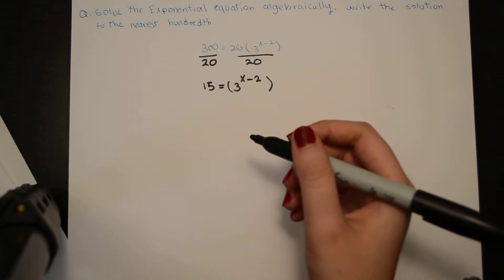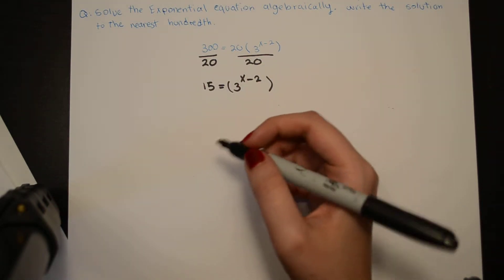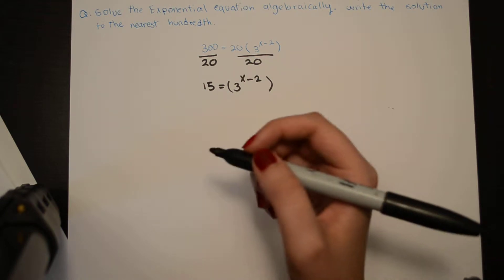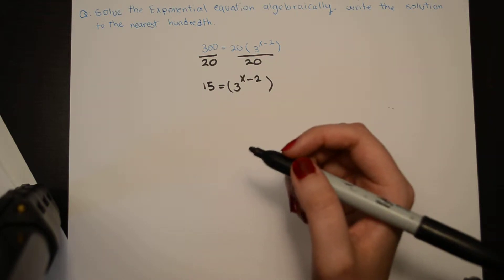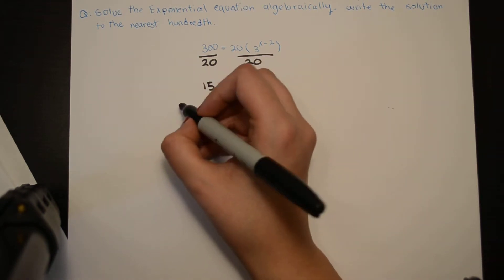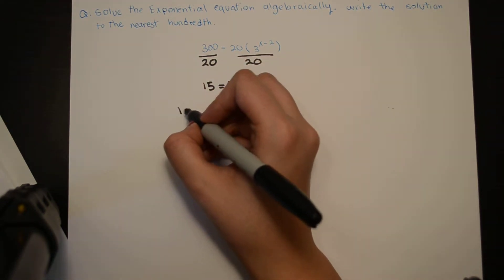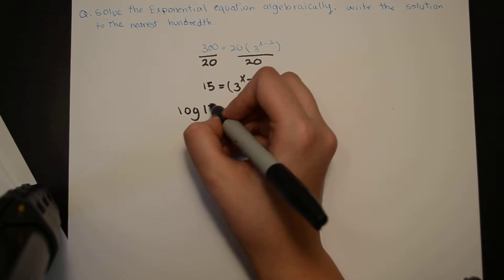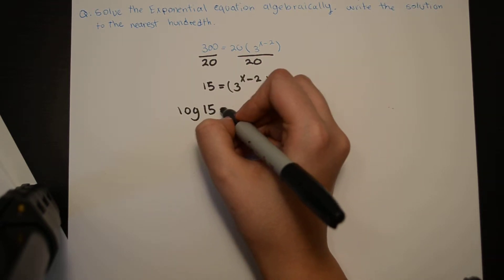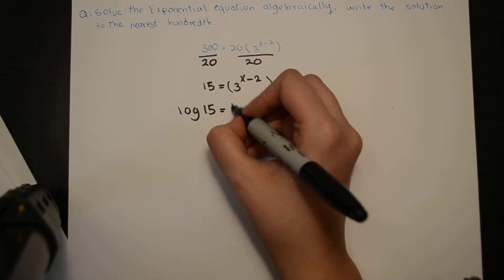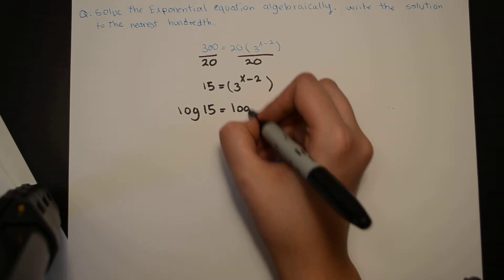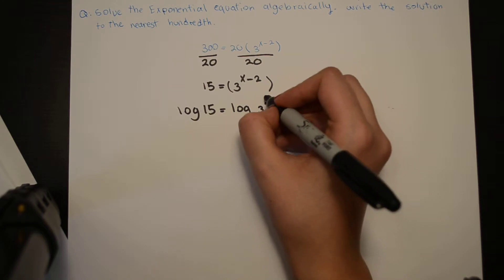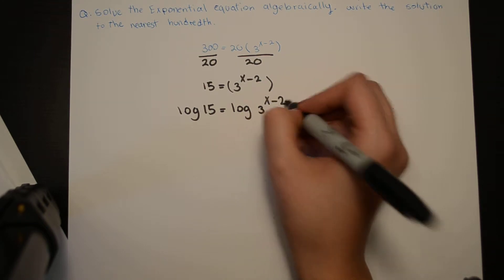In order to solve this, I'm going to use the log method. I'm going to write log of 15 equals log of 3 to the power of x minus 2.